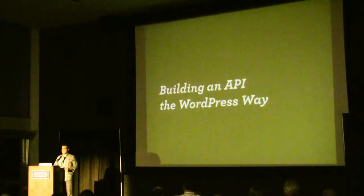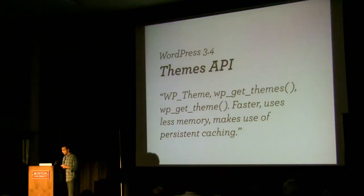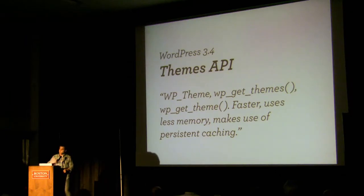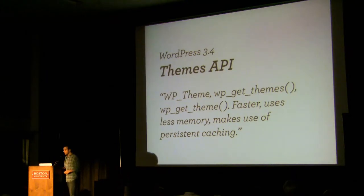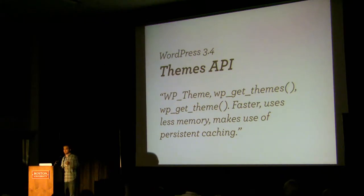What I'm going to talk about today is an API that was introduced in WordPress 3.4. I'm actually only using it as a case study to nail down different points. The API I'm going to be talking about is what was called WP_Theme — the complete rewrite of the Themes API. We were dealing with 4,000, 5,000, 6,000 lines of code, many of which had existed for years. It's faster, uses less memory, and makes use of persistent caching.